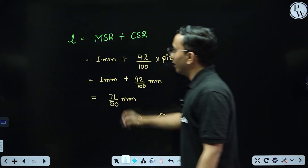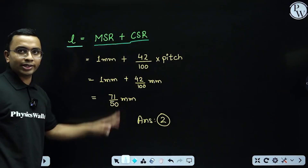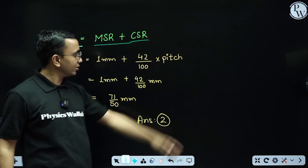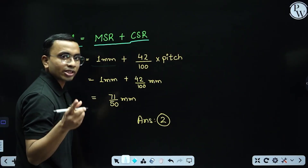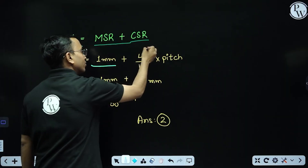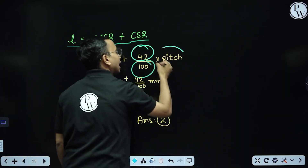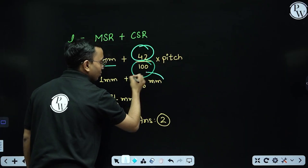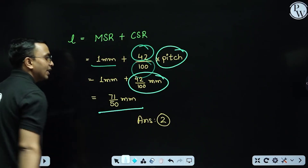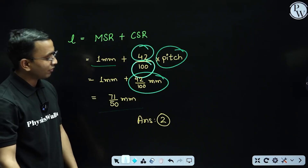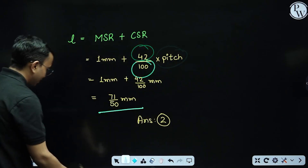Length = main scale reading + (circular scale reading / total divisions) × pitch. Zero error is not given, so not considered. Main scale reading is 1 mm, circular scale is 42 divisions, so 42/100 × 1 mm = 0.42 mm. Total diameter = 1 + 0.42 = 1.42 mm = 71/50 mm. So the answer is option two.